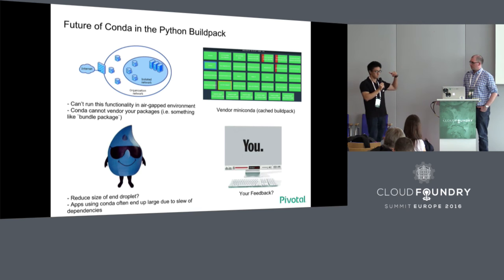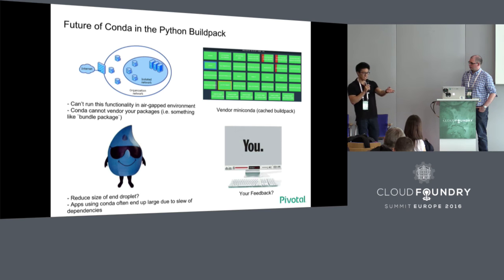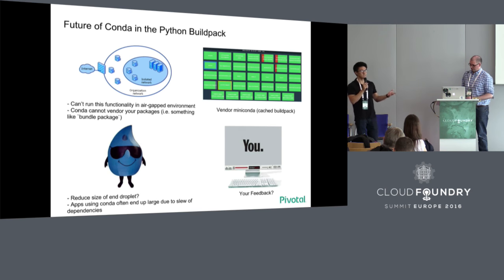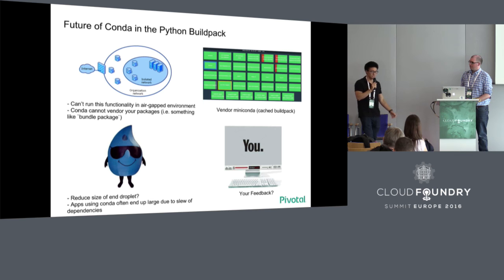Something that is a higher priority is reducing the size of the end droplet. We were seeing with our sample apps using Miniconda in the Python BuildPack that we were getting some ridiculous disk sizes for the end droplet — pushing the sample app would fail with a message saying you've run out of disk space for your droplet. This is because you have all these large dependencies on your droplet. Maybe there's a way to not have all dependencies on the end droplet, only the ones you need — we would do an investigation to find out.